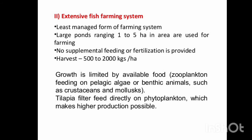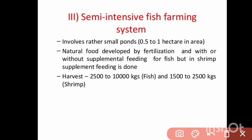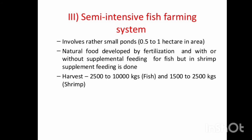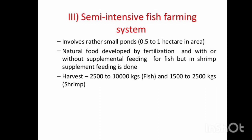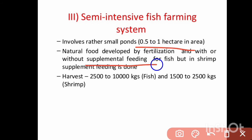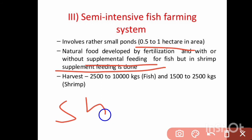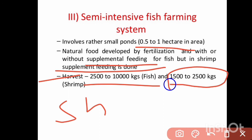Next is semi-intensive farming, which involves a bit more management. It uses rather small ponds — 0.5 to 1 hectare — compared to extensive farming. Natural food is developed by fertilization without supplemental feed for fish, but in shrimp farming, supplemental feed is provided. Harvest is 2500 to 10,000 kg of fish and 1500 to 2500 kg of shrimp per hectare.